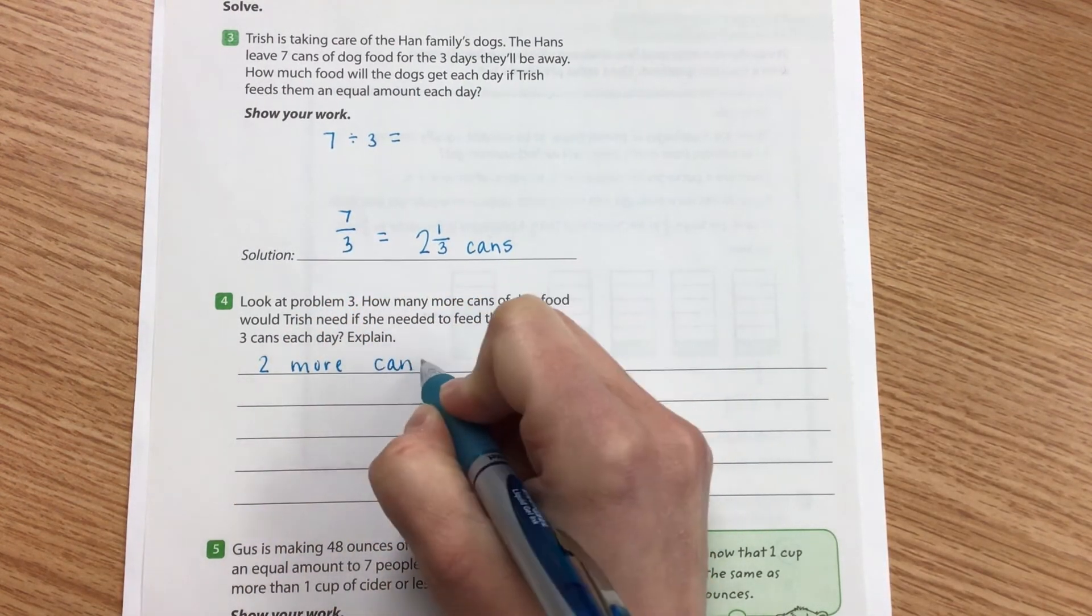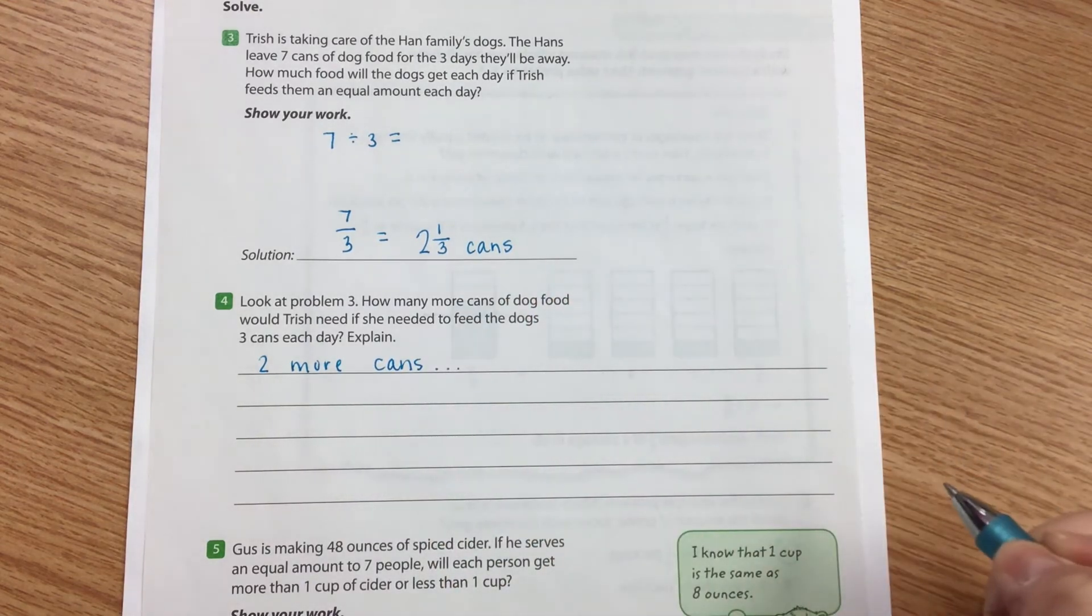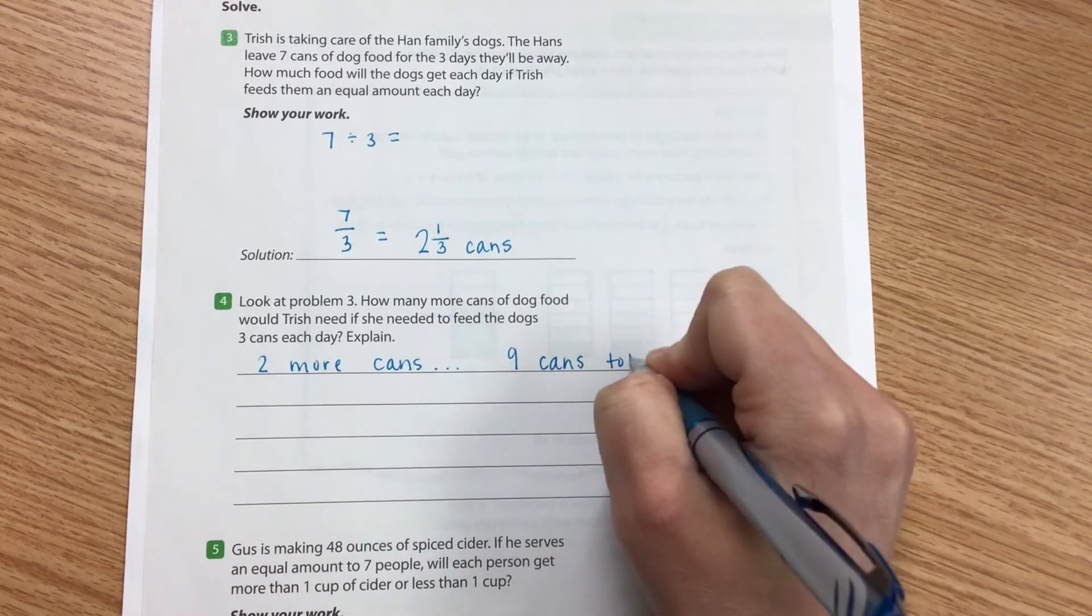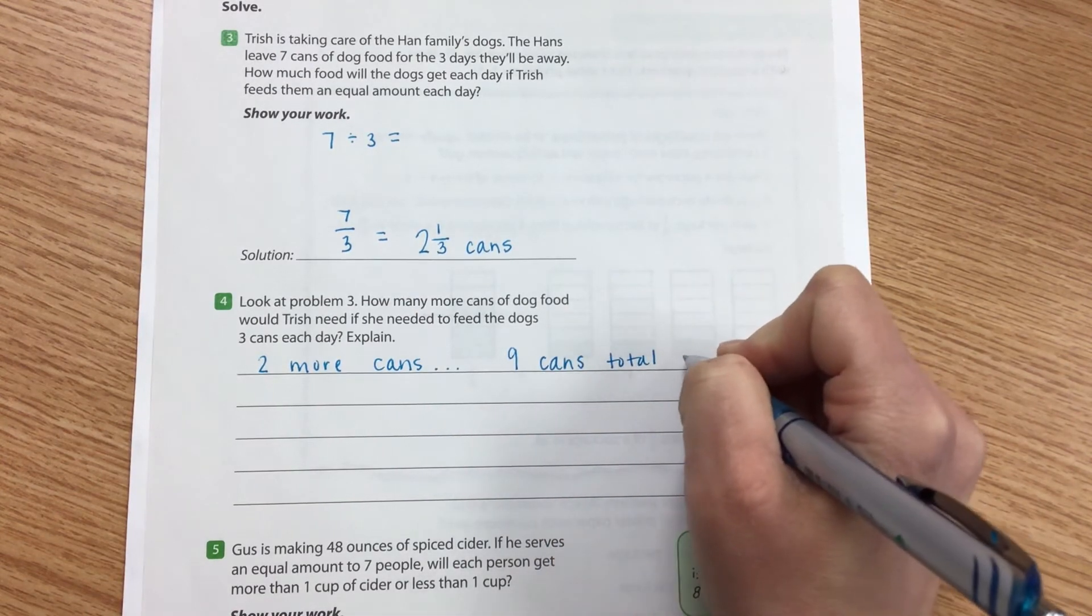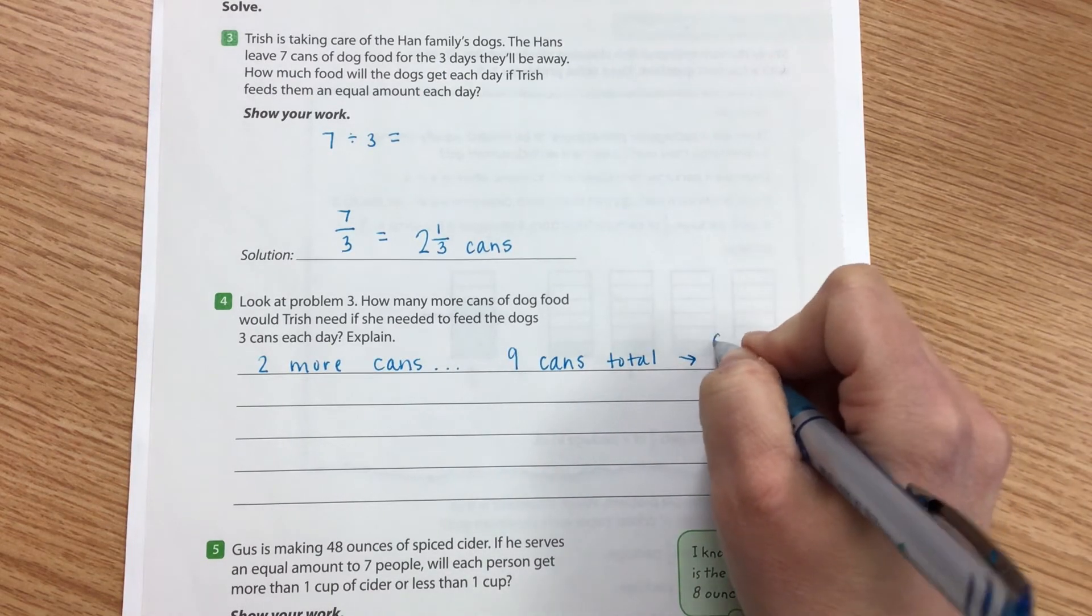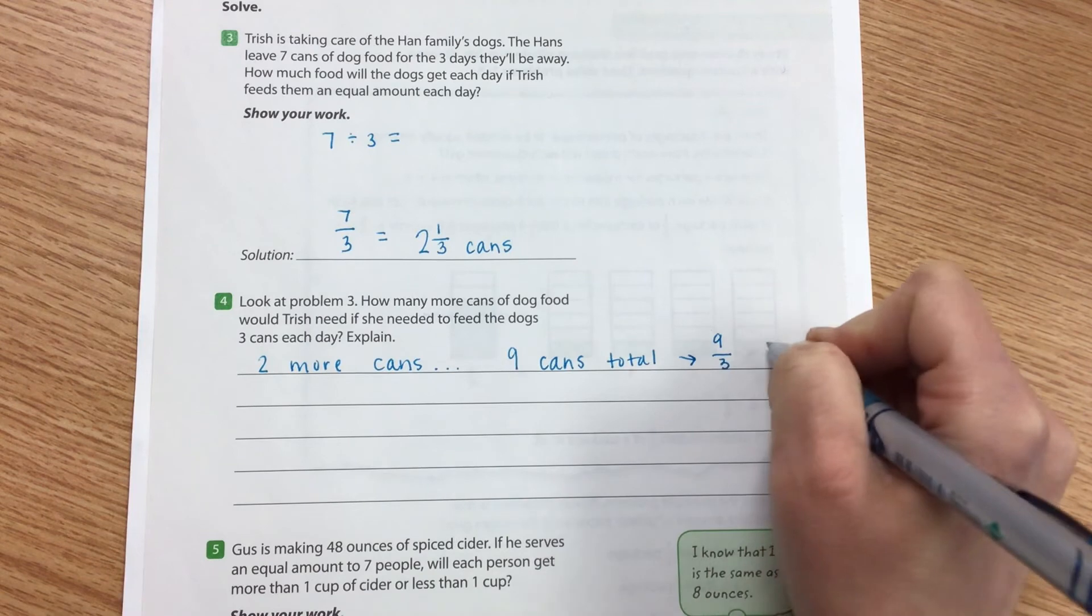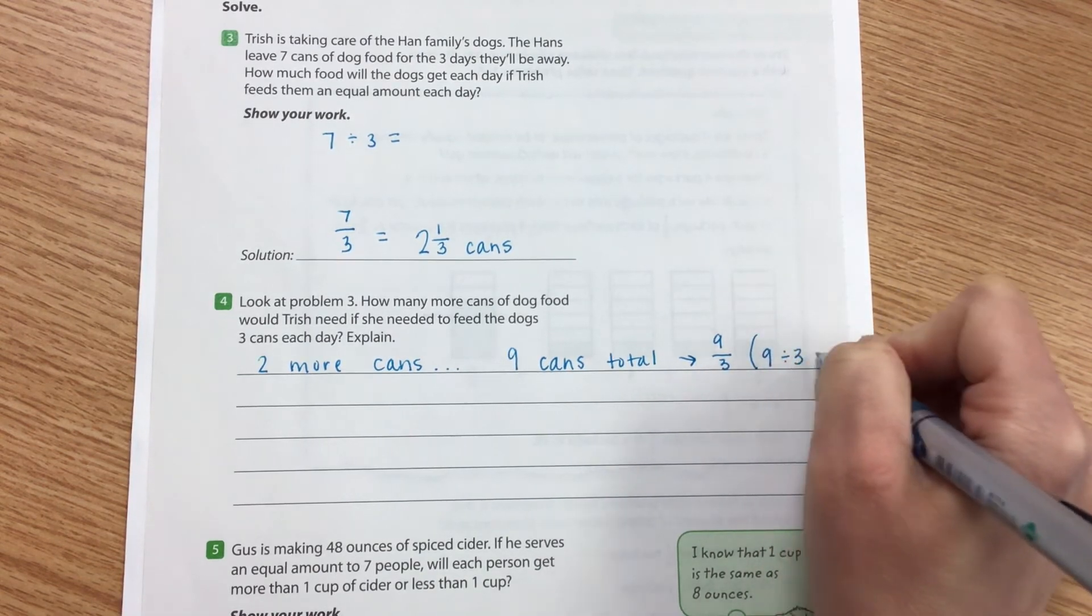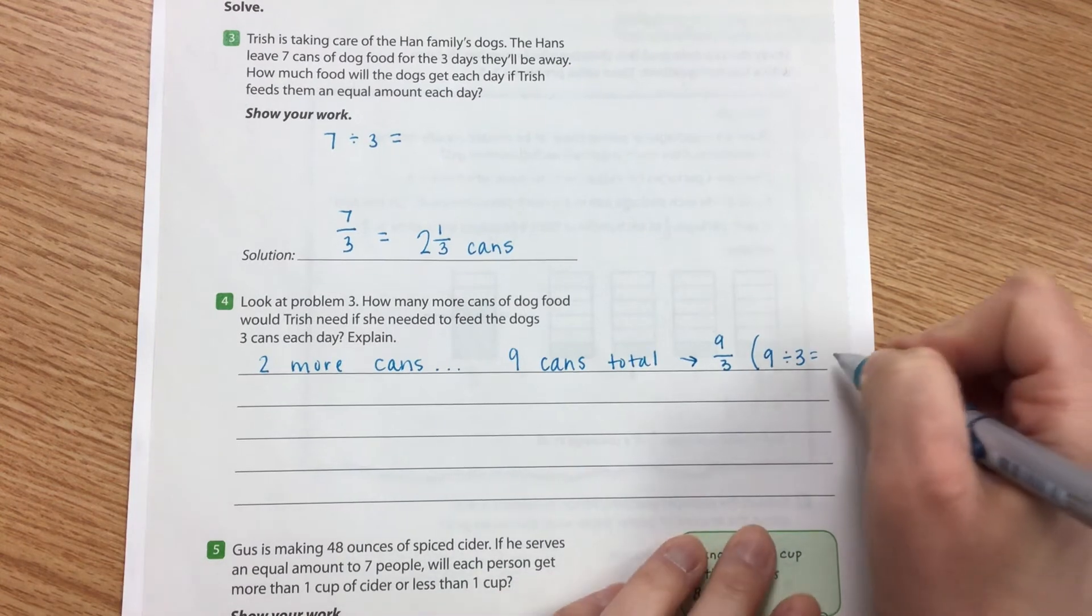How do I know that? Because two more cans would mean nine cans total. I know that if I take nine and I divide it by three, I'm going to put this in parentheses, nine divided by three, I get three.